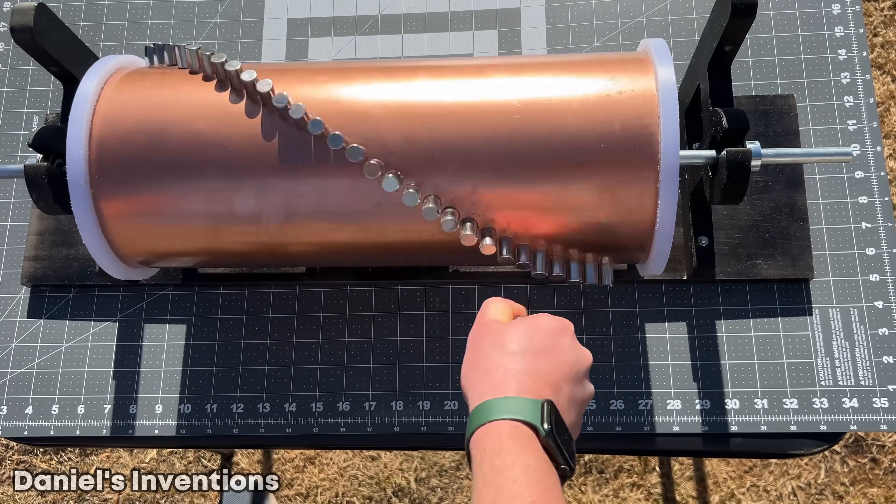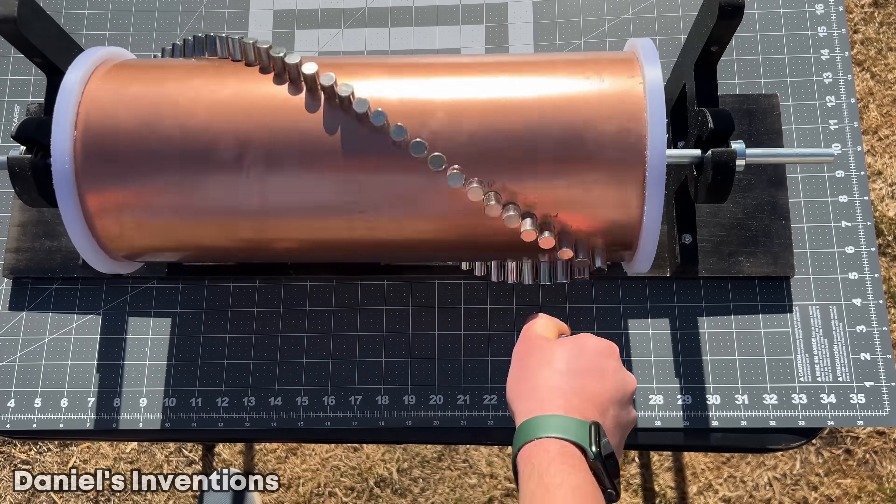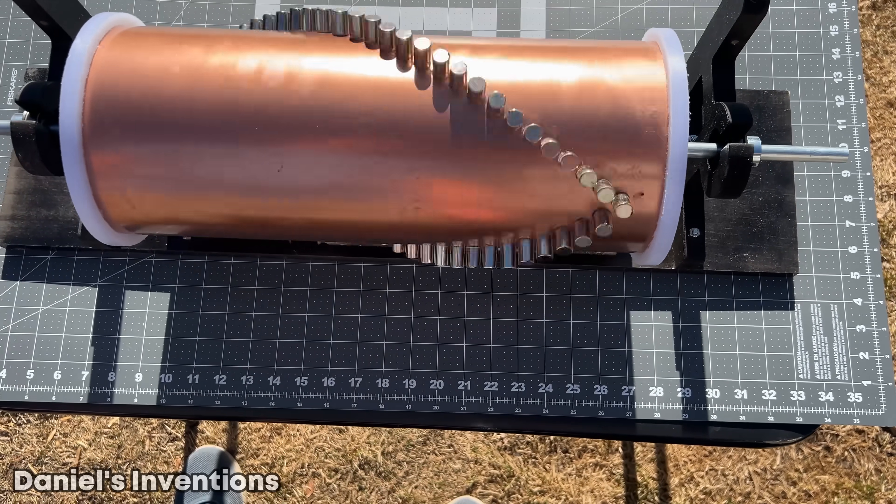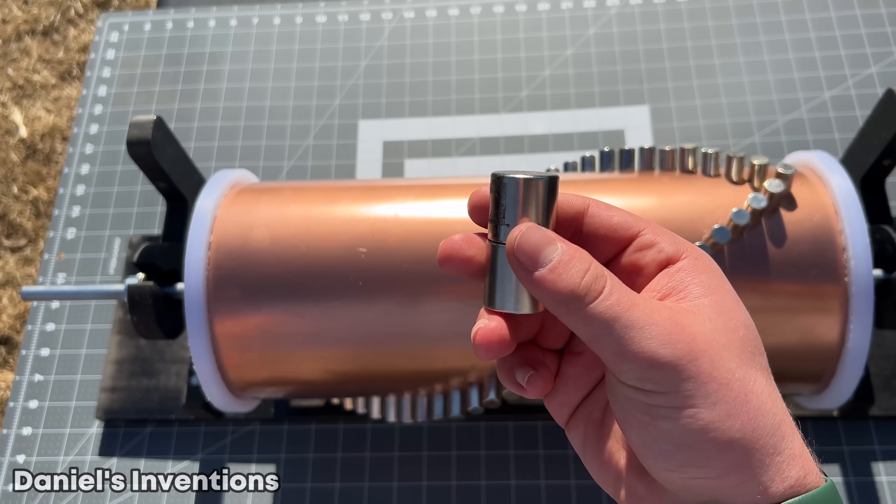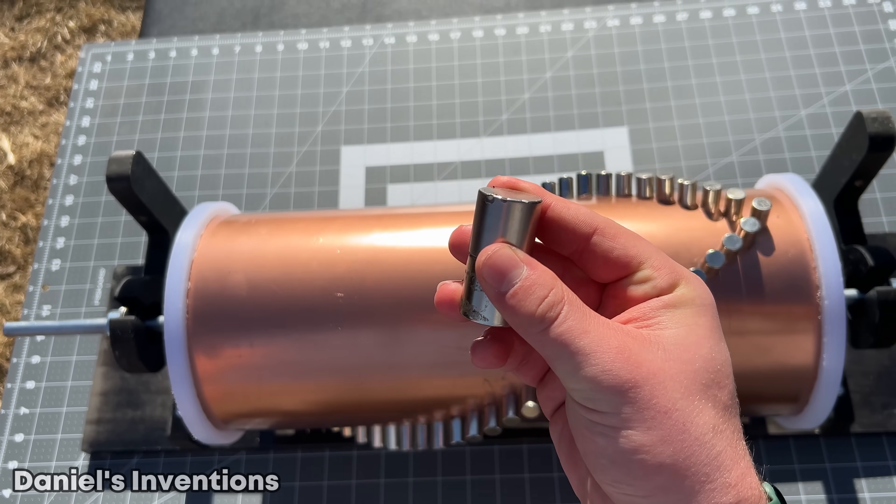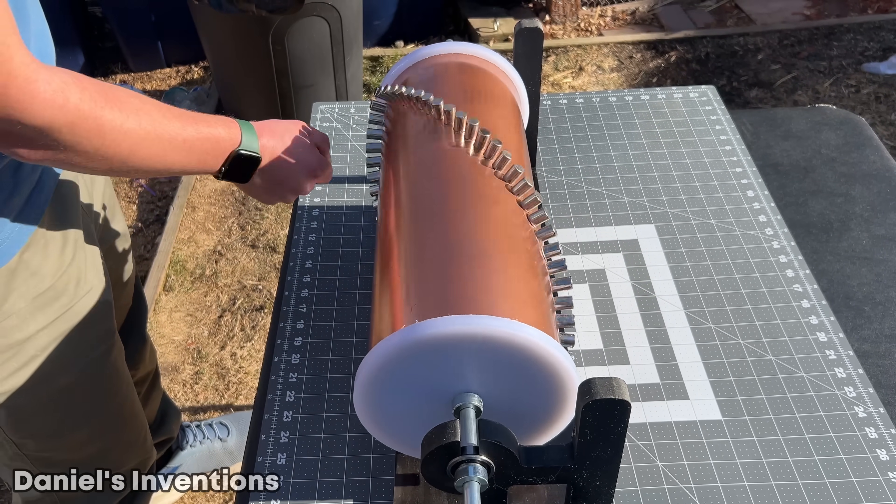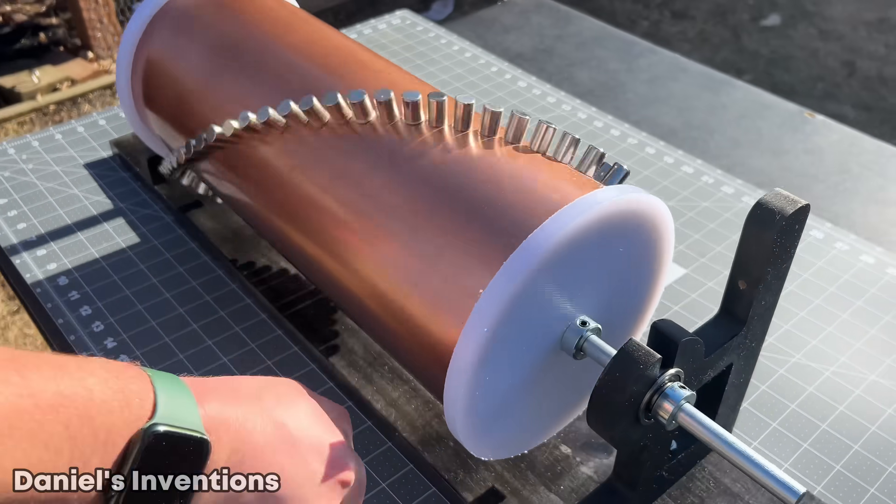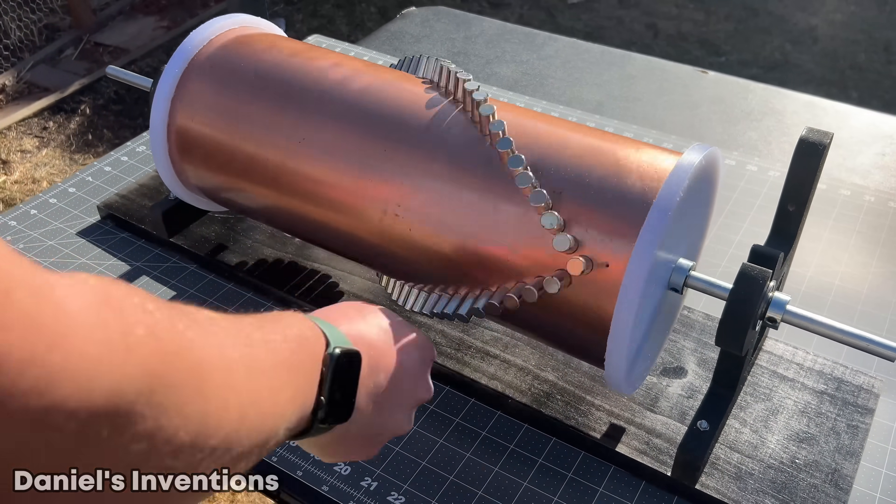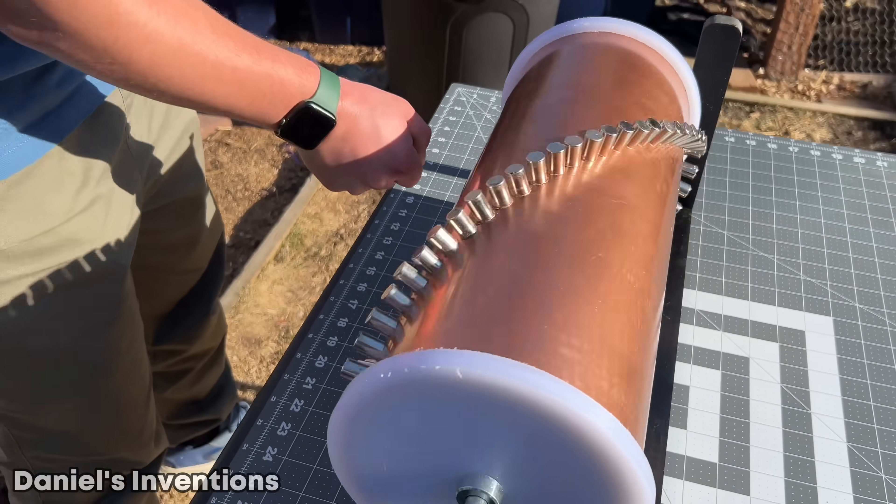The neodymium permanent magnets are very powerful and they can be used to affect the rotor from a distance. Now, I will test the motor in repulsion configuration. In repulsive configuration, it is more difficult to get the timing perfect because the actuator magnet has to always be behind the rows of permanent magnets.